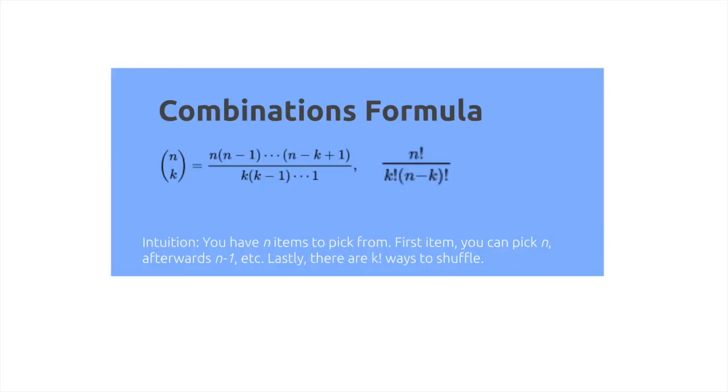Also, there's k factorial ways to shuffle the items you picked, so that reduces the order of possibilities.